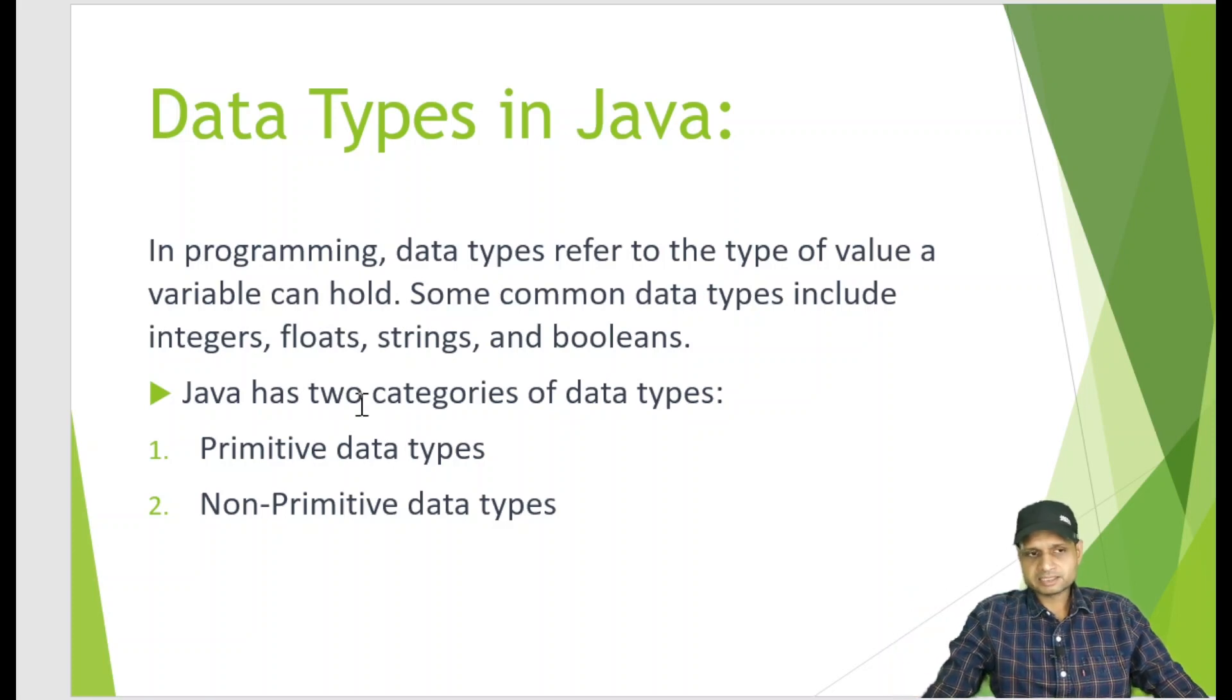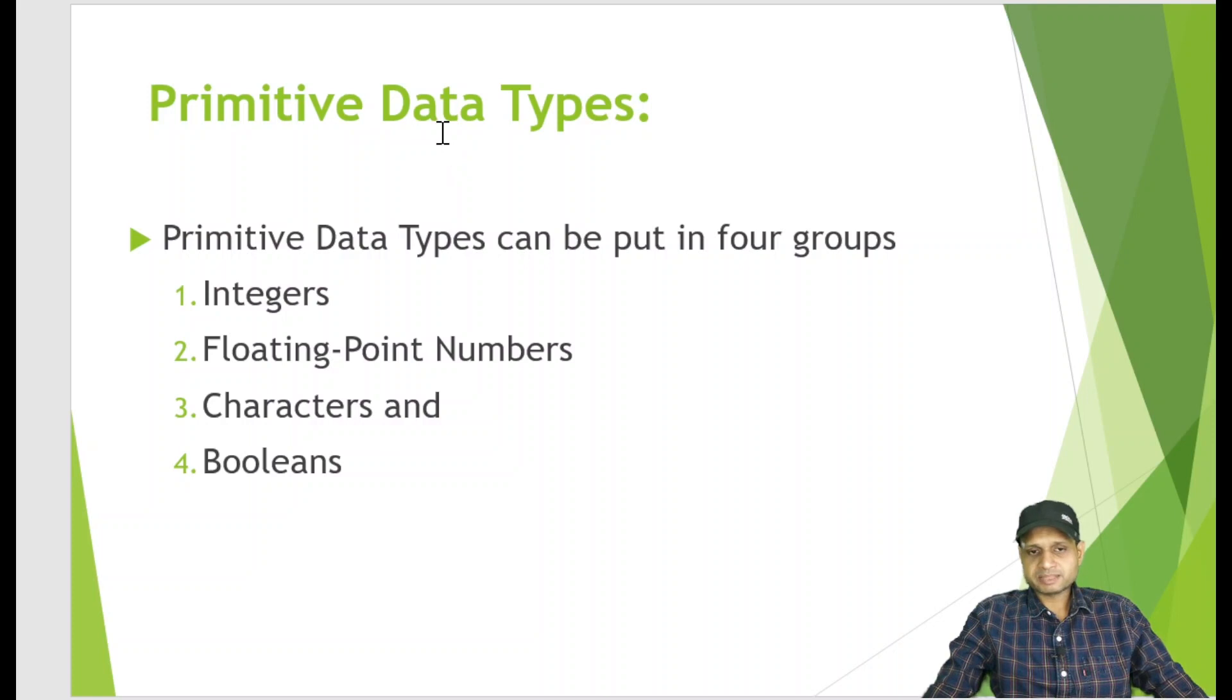Primitive data types can be put into four groups. The first one is integers, second one is floating point numbers, third one is characters and fourth one is booleans. We will also work on programs in this video.